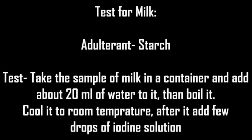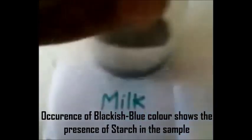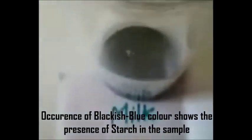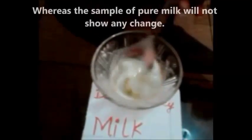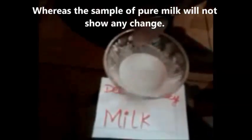Test for milk — adulterant: starch. Take a sample of milk in a container and add about 20 ml of water to it, then boil it. Cool it to room temperature, then add a few drops of iodine solution. Appearance of a blackish-blue colour shows the presence of starch in the sample, whereas a sample of pure milk will not show any change.